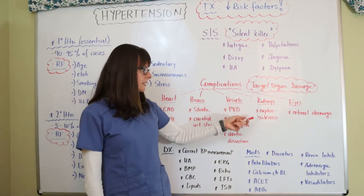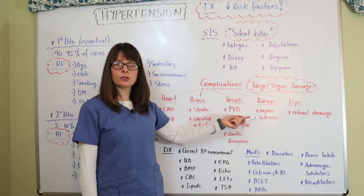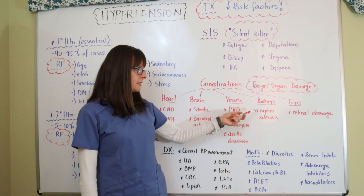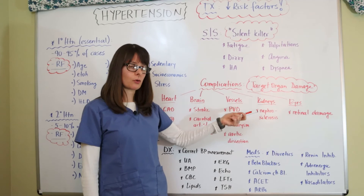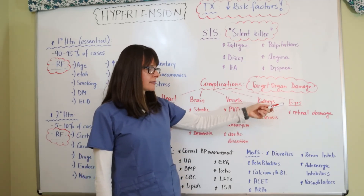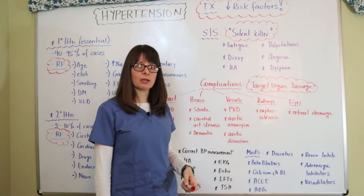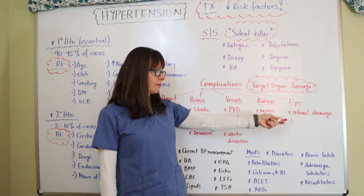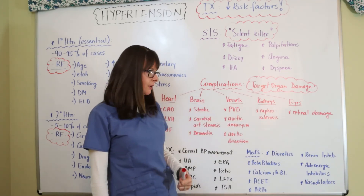In the kidneys, hypertension can lead to nephrosclerosis — similar to atherosclerosis — meaning the kidneys become more clogged and prone to chronic kidney disease. In the eyes, just as diabetes causes diabetic retinopathy, high blood pressure can cause retinal damage with long-term complications including blindness.